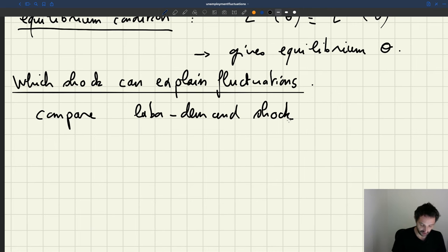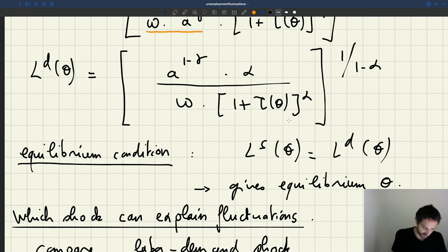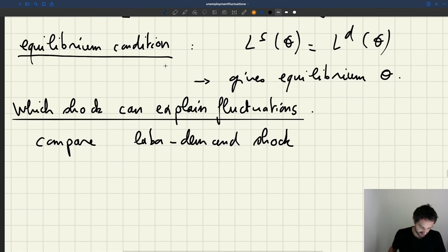And so here the labor demand shock. We need a shock that affects the labor demand, and we are going to take a shock to labor productivity here, which clearly is affecting the labor demand not the labor supply. So we are going to take a shock to A.